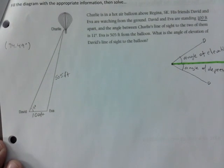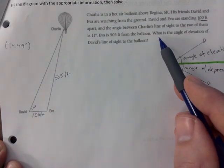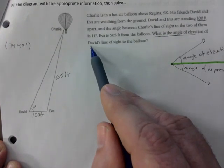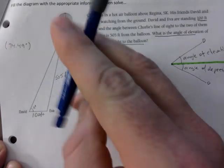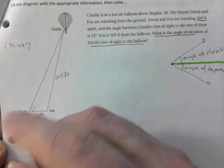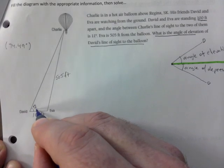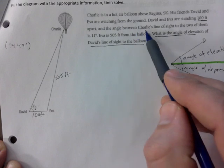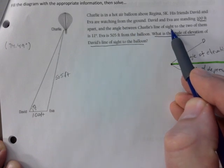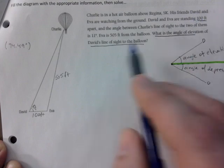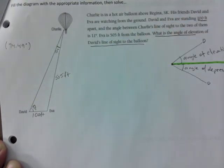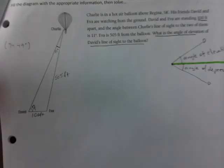Eva is 505 feet from the balloon, so this is 505 here. That's the direct distance, and we're going to calculate the angle of elevation. Wait, I got this wrong, didn't I? Because it's asking what is the angle of elevation of David's line to the balloon. So this is actually question mark, I'm going to call that angle D.